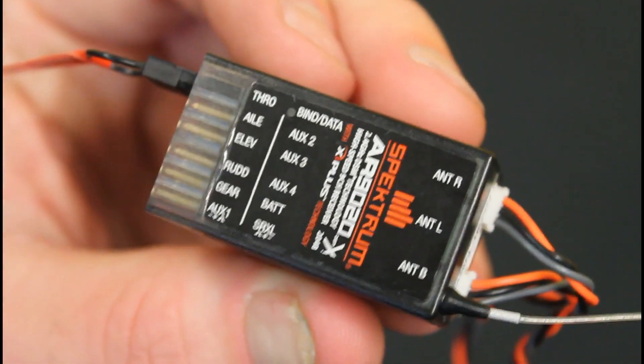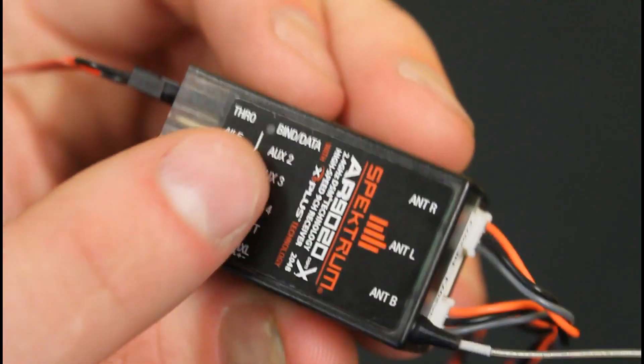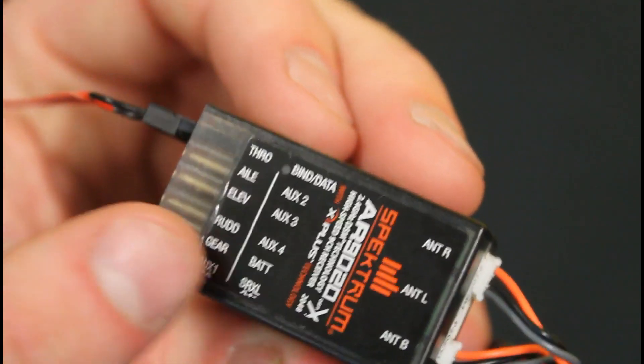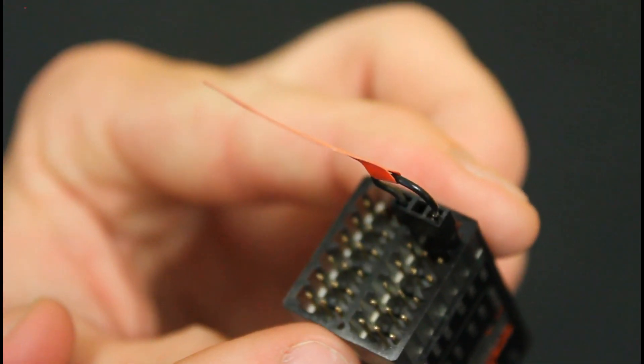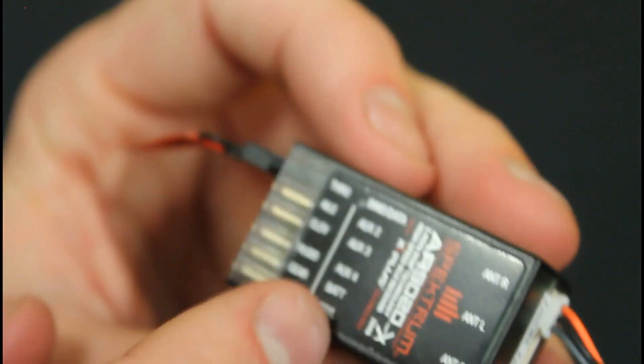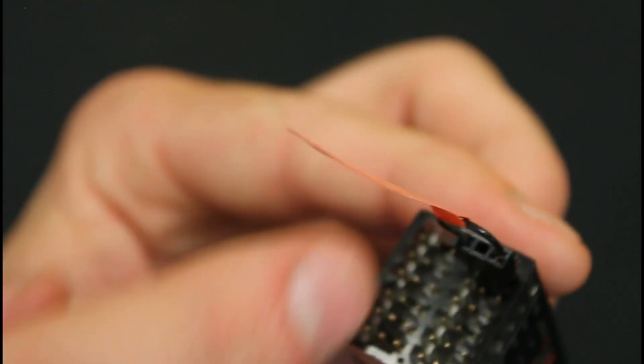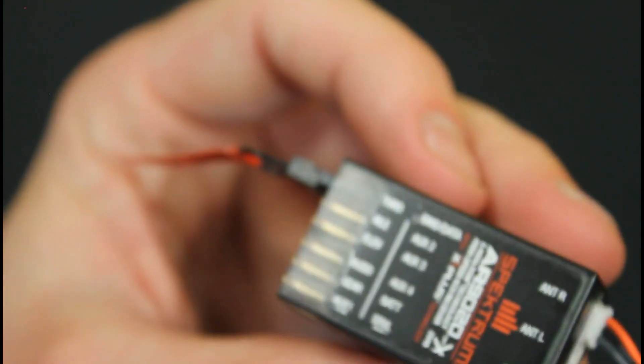So we're looking at the other side of the receiver. Now you'll notice the bind and data is on the right-hand side, the right-hand list. So that relates to the right-hand pin allocation. So that's the same for all the servo outs and they just relate directly to the pins on the side.